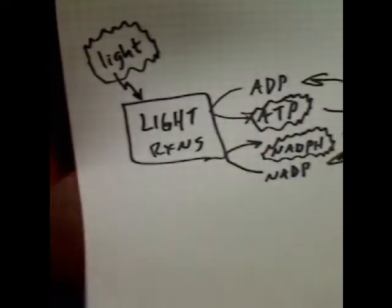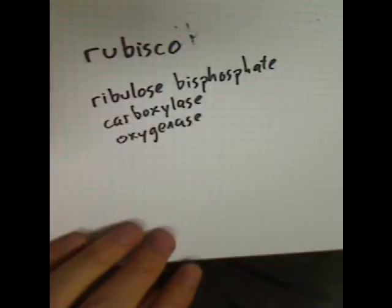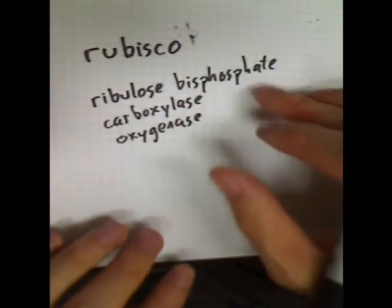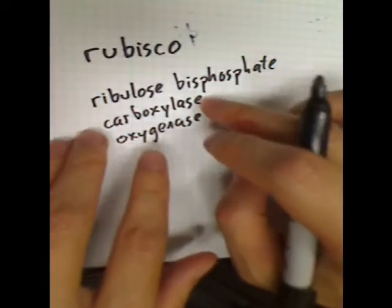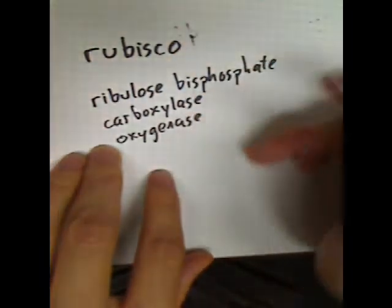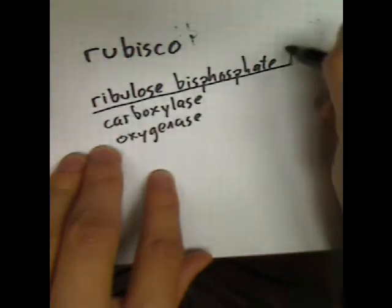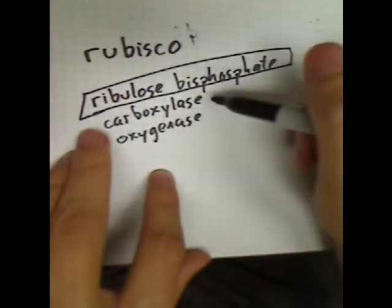The set of reactions that does this business — the Calvin cycle, where the Benson gets dropped — all starts with an enzyme called Rubisco. Rubisco stands for ribulose bisphosphate carboxylase oxygenase. What Rubisco does, as you can tell from the name, is that it takes a compound called ribulose bisphosphate, which is a five-carbon sugar, and it carboxylates it — it adds carbon to it.